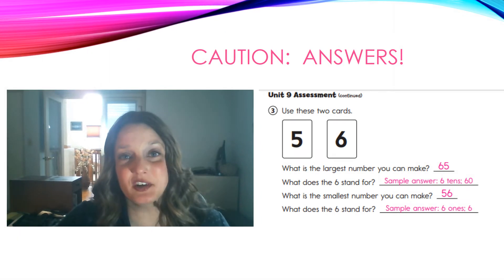Okay, let's check your answers. When you put the two cards together, the largest number you can make is 65. In that number, the 6 stands for 6 tens, or 60. The smallest number you can make with those two cards would be 56. And in that number, the 6 stands for 6 ones, or 6.